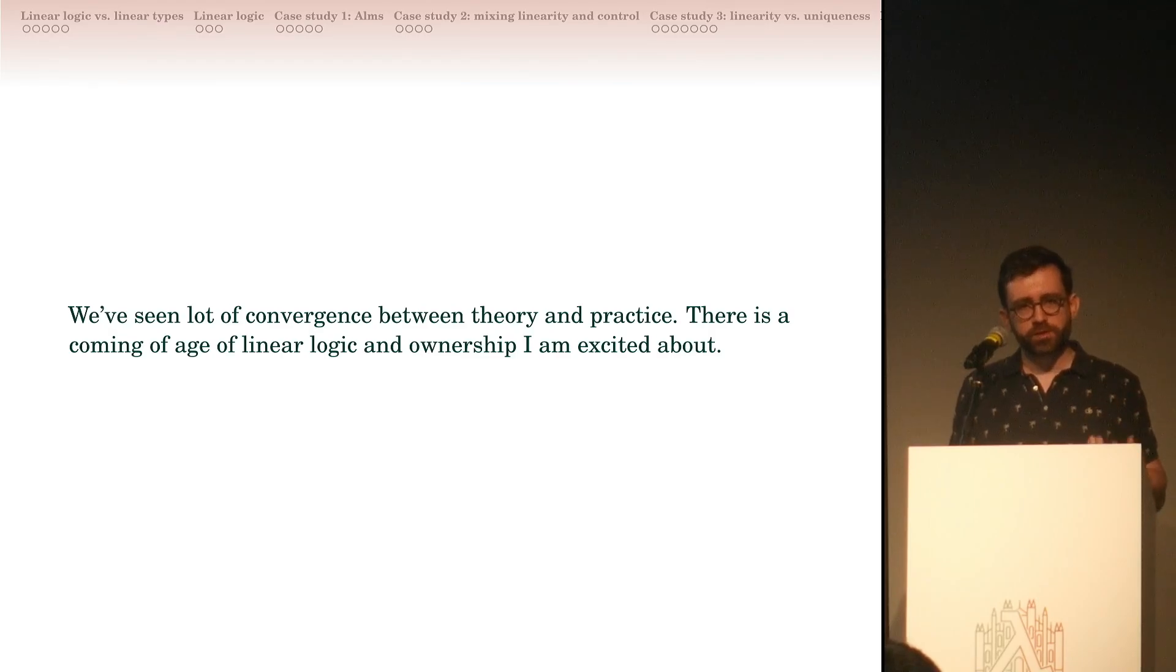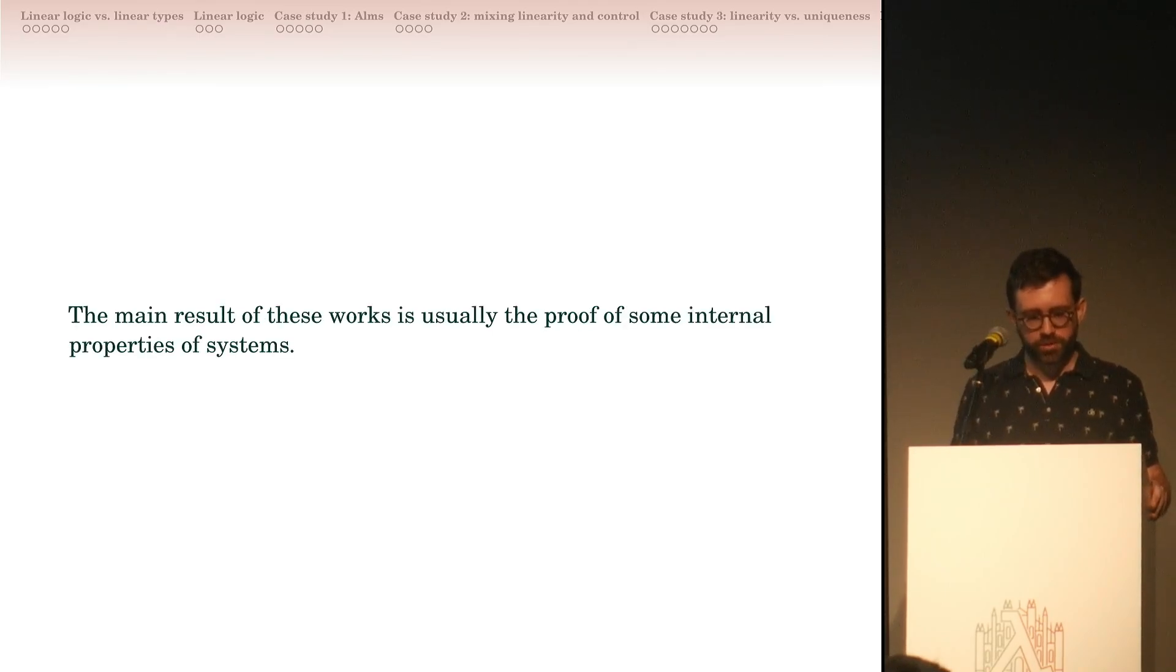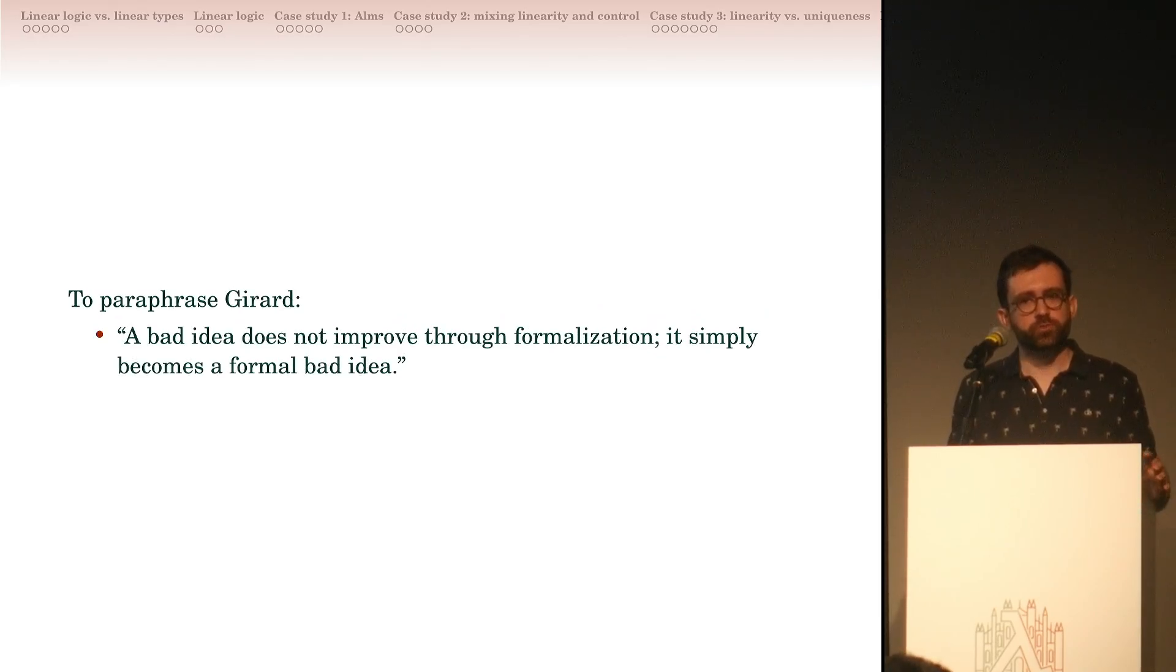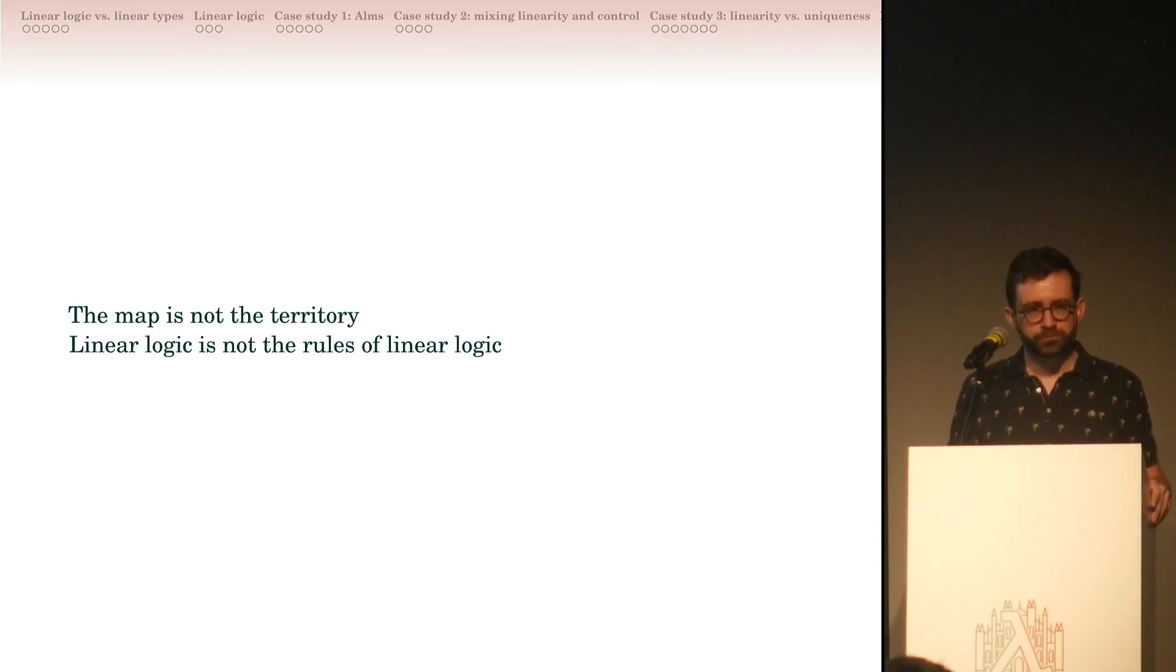To conclude, we've seen a lot of convergence between theory and practice. I find that there is a coming of age of both linear logic and ownership, and we can be very excited about it. I found that what works works in both theory and practice at the same time. One thing I observed with certain works on linear types is that the main result is usually the proof of some internal property of a type system. But I'm going to paraphrase Girard: a bad idea does not improve through formalization, it becomes a formal bad idea. To paraphrase Sabine Hossenfelder, it's not because you do something that is refutable that it is science. Another point I've been trying to make is that the map is not the territory. There's a difference between linear logic and the rules of linear logic. Thank you.